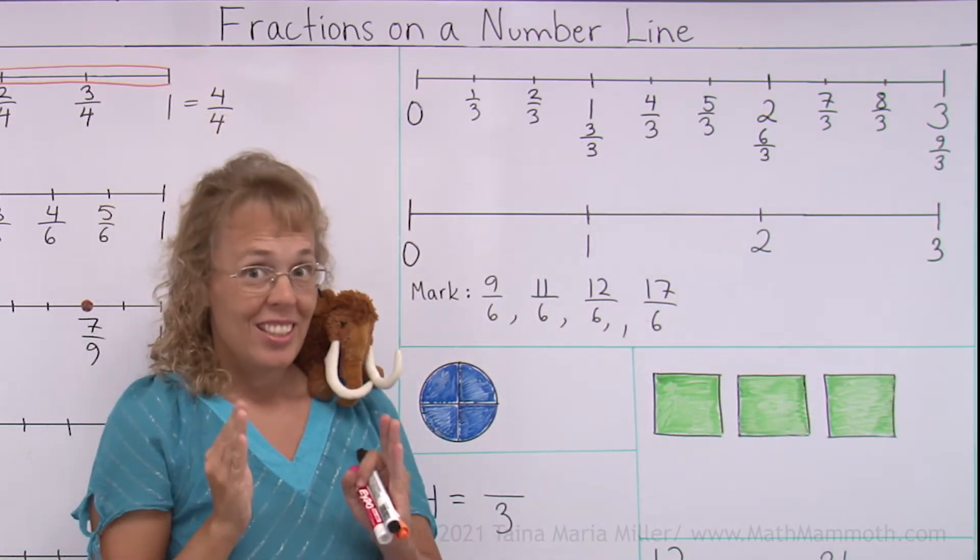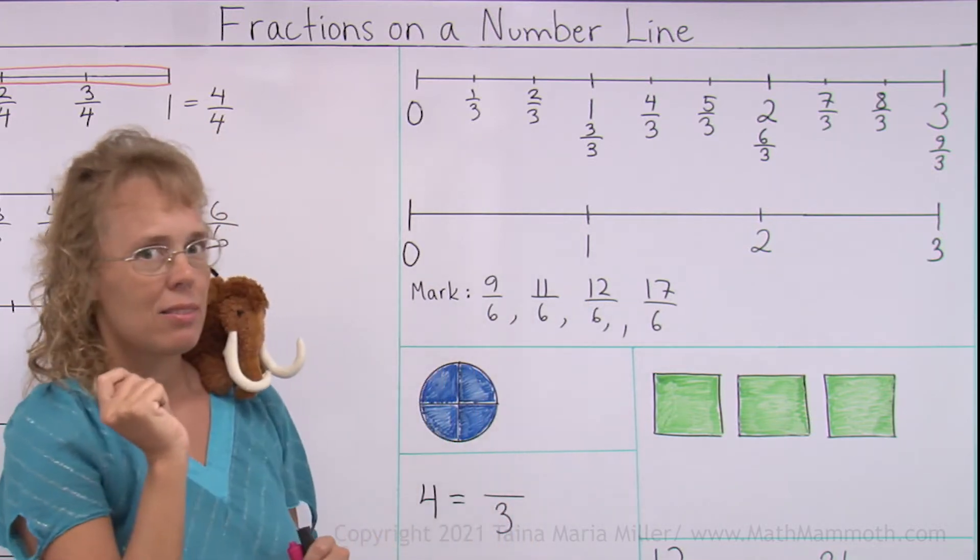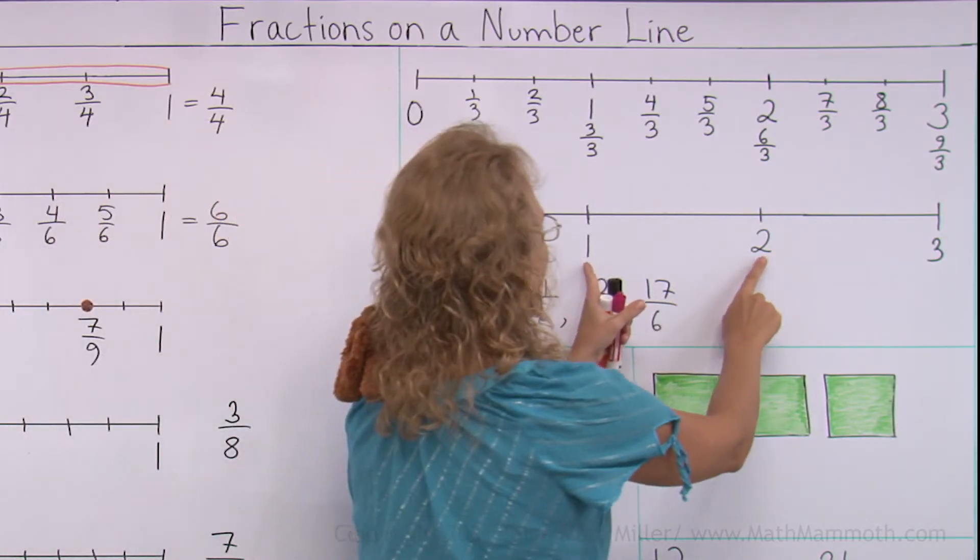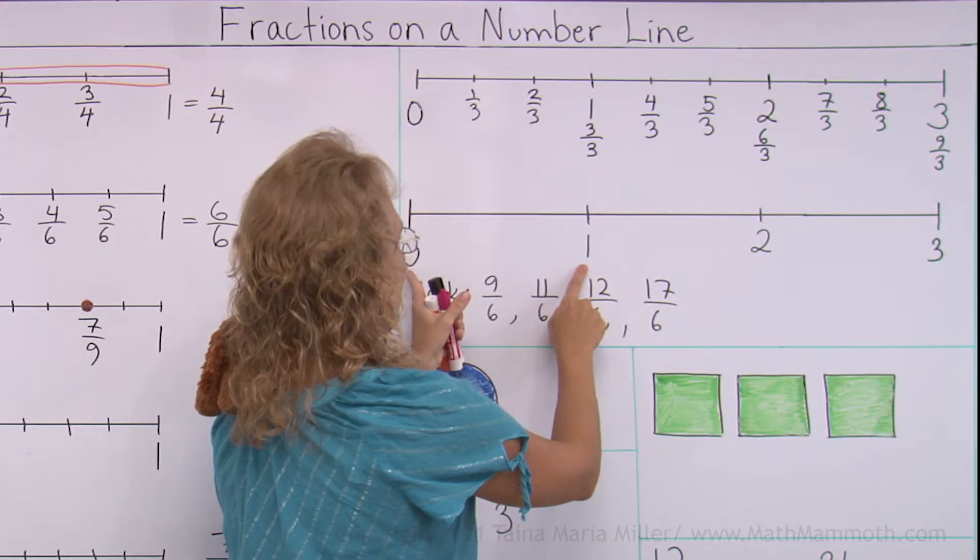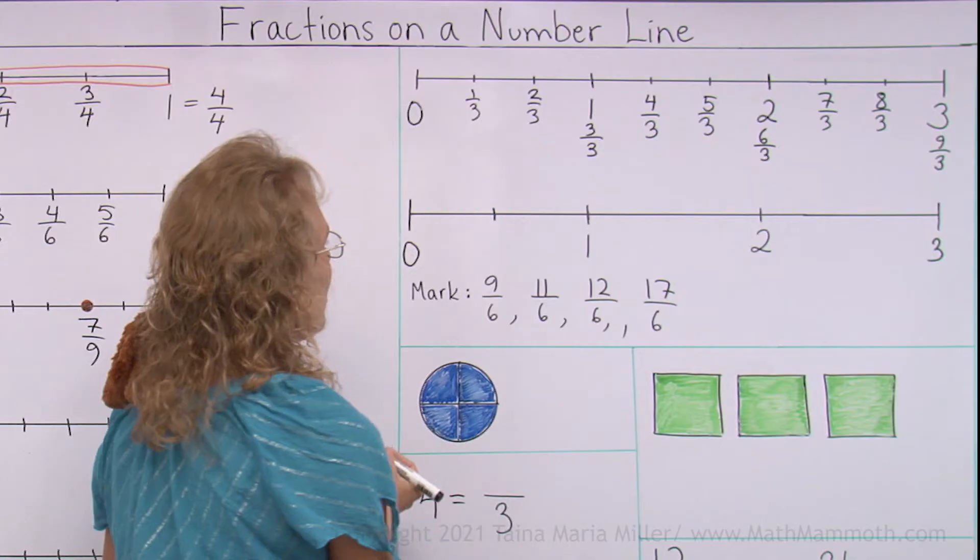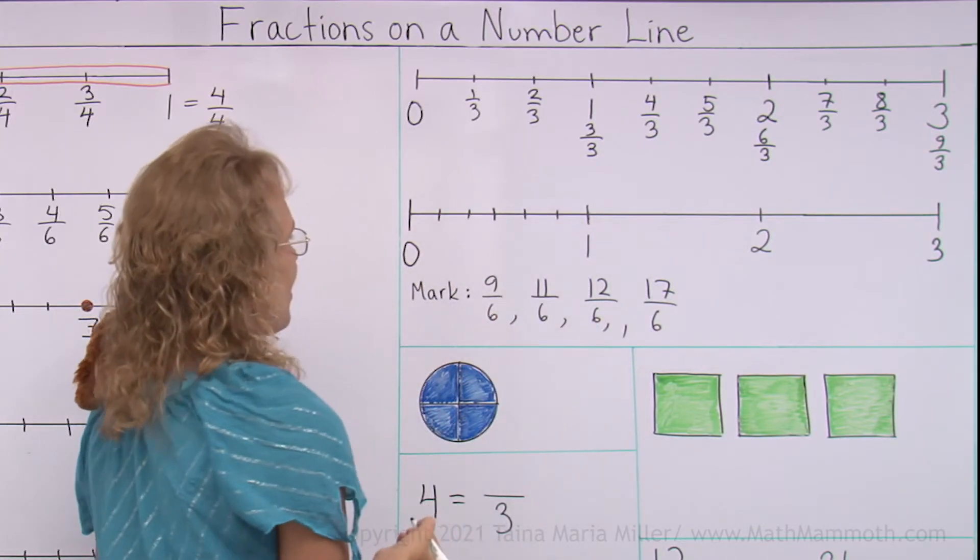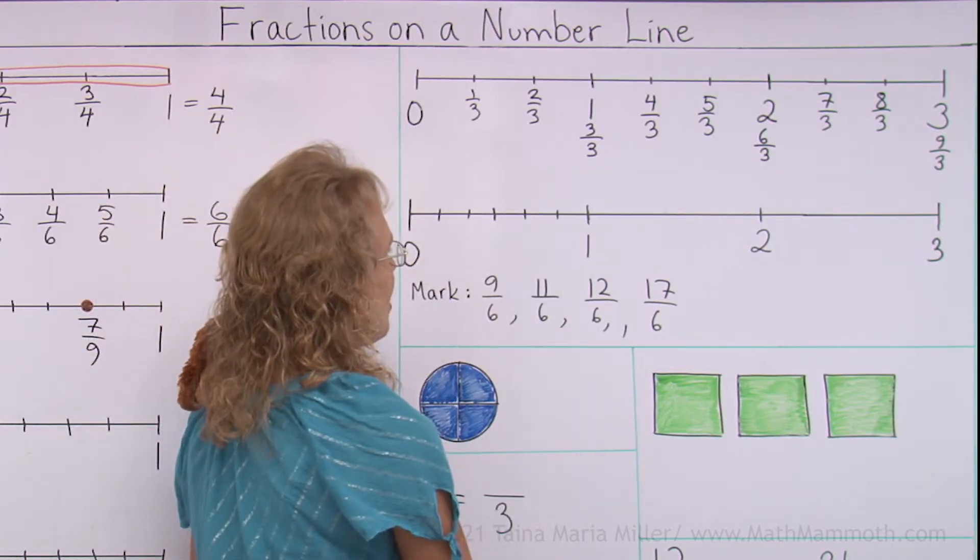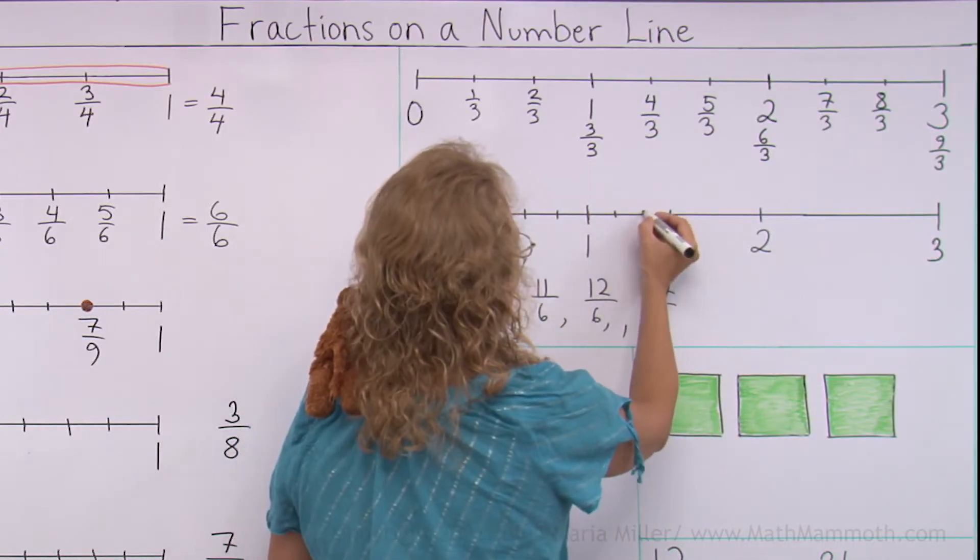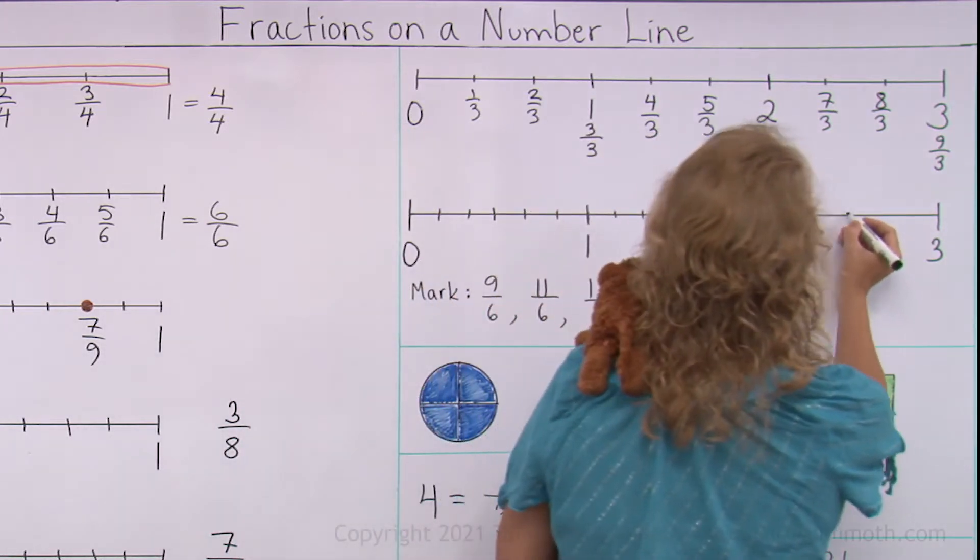And to mark them, I again need to draw those tick marks and divide the number line into how many parts? 6 parts, right. But 6 parts between each 2 whole numbers. So this one, I divide it into 2 halves, and then I put 2 tick marks here, and 2 tick marks here. So now that one, from 0 to 1, is divided into 6 parts, and I do the same here. First into 2 halves, and then put 2 tick marks there, and now I have 6 parts between 1 and 2.